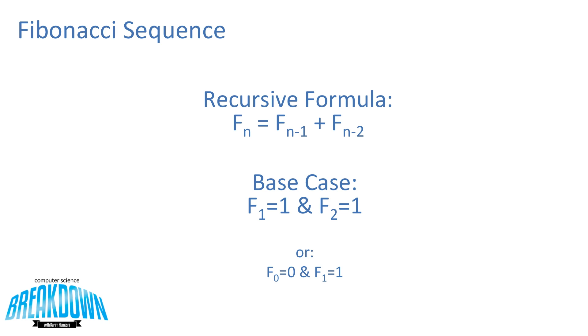Some textbooks will start the sequence at 0, so you can have F of 0 is equal to 0 and F of 1 is equal to 1. Both are correct.